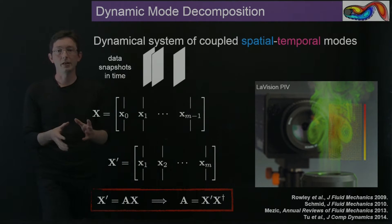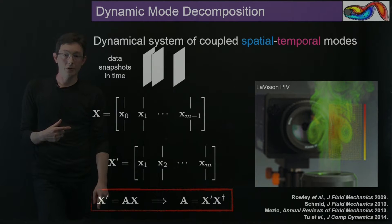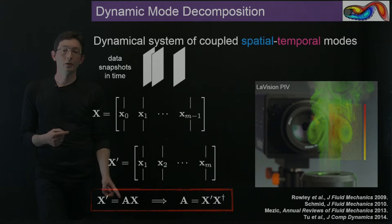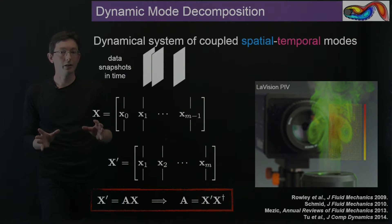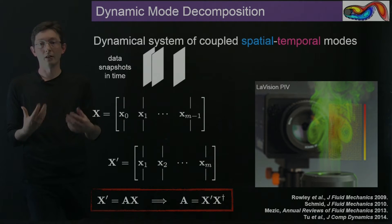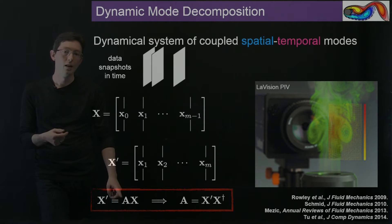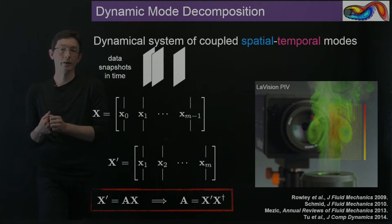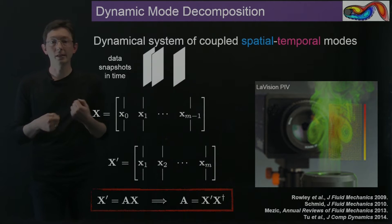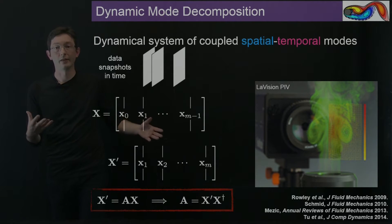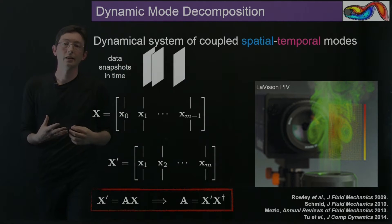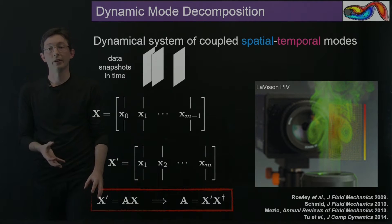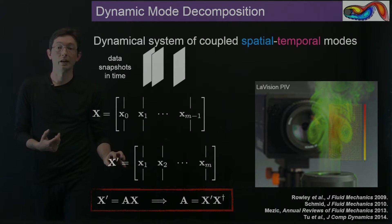Dynamic mode decomposition is built on the observation that data at a future time X prime may be related to the data at a previous time step X by some large linear operator A. This is not saying that our fluid dynamics are linear — we know that Navier-Stokes are inherently nonlinear in many situations. But we're going to relate the data in X to a future time step in X prime by this large linear operator A, which has enough degrees of freedom to approximate the evolution of the system even though it's nonlinear.